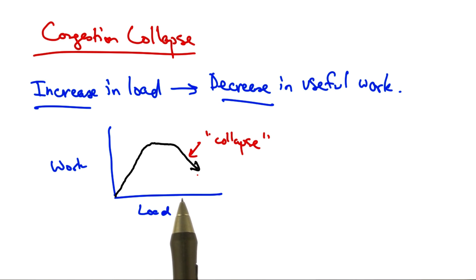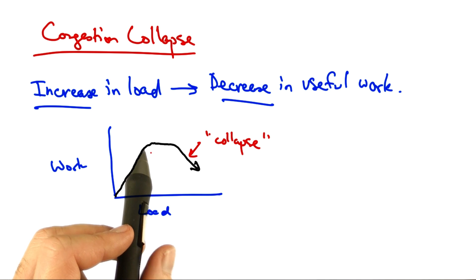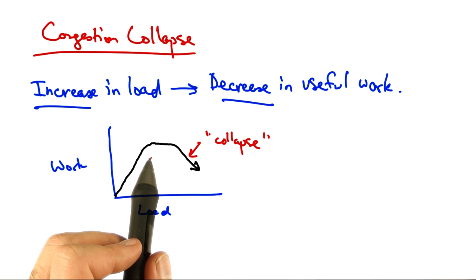In congestion collapse, an increase in traffic load suddenly results in a decrease of useful work done. As we can see here, up to a point, as we increase network load, there is an increase in useful work done.